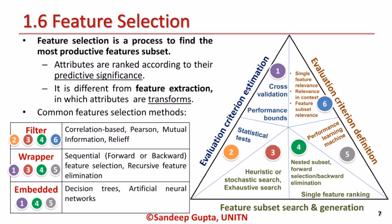The three edges of the triangle depict the techniques deployed in feature selection methods. The three techniques are: evaluation criterion estimation, which uses cross-validation, checks performance bounds, or performs statistical tests; evaluation criterion definition, which uses the relevance of every single feature or in context to each other, or a feature-subset relevance, and also applies performance learning; and feature-subset search and generation, which uses exhaustive search, heuristic or stochastic search, and applies single-feature ranking by nesting subset, forward selection, or backward elimination.